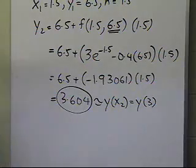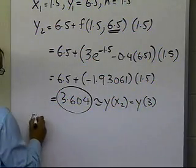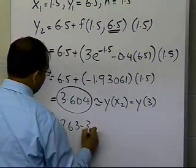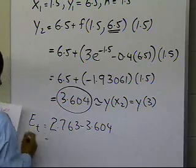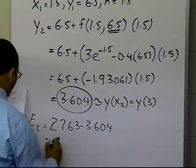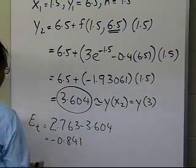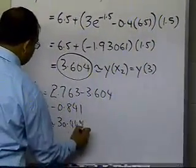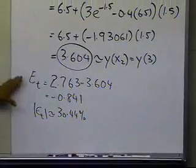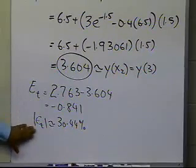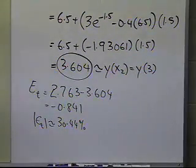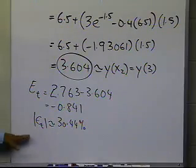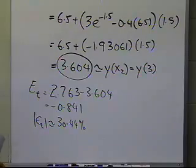With h equal to 1.5, the approximate value at x equals 3 is 3.604. The true error is 2.763 minus 3.604, which is minus 0.841, and the relative true error is approximately 30.44%. Comparing: it was 190% for h equal to 3, and now it's 30% for h equal to 1.5. So if you keep decreasing the step size, you get better and better approximations for y.